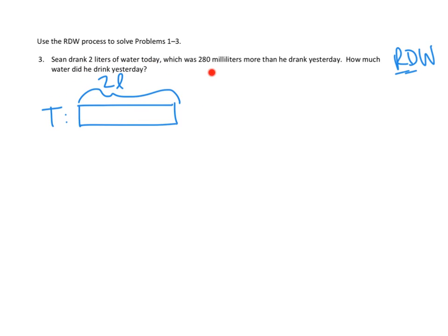That's 280 milliliters more than he drank yesterday. Oh, yesterday. So I'm going to do that with a Y. Yesterday, he drank some amount, but it was less. How much less? Well, we know exactly how much less, right? It was 280 milliliters less than he drank yesterday. I'm going to draw a little dotted line.